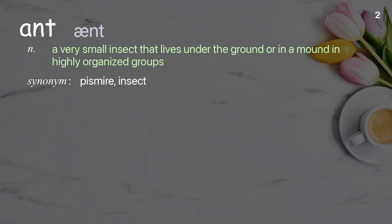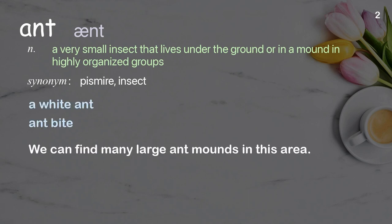Ant: a very small insect that lives under the ground or in a mound in highly organized groups. Examples: a white ant, ant bite. We can find many large ant mounds in this area.